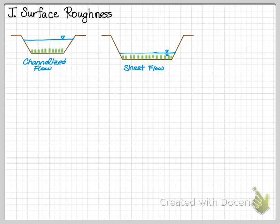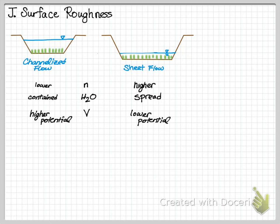Continuing on surface roughness: when you have channelized flow, your flow depth is relatively high, while in sheet flow, your flow depth is relatively low. As a result, roughness is much lower in channelized flow than in sheet flow — it can be on the order of 10 times larger. For example, roughness in channelized flow may be 0.03, while in sheet flow it may be 0.3. Water is contained in channelized flow, but in sheet flow it will spread. Velocity is quite high in channelized flow and has higher potential, while in sheet flow you have lower velocity and lower potential.